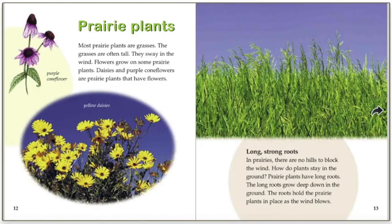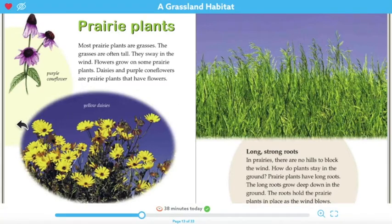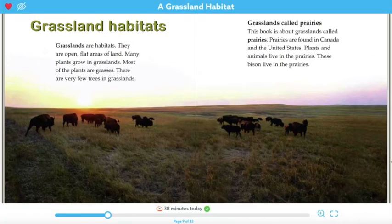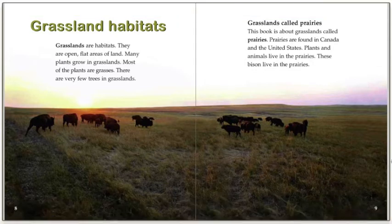Now take a moment and think about what a prairie is after we've read these couple pages. The author tells us that this book is about grasslands called prairies, and that prairies are found in Canada and the United States, and plants and animals live in the prairies. So prairies are a type of grassland that plants and animals live in.